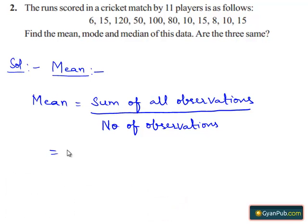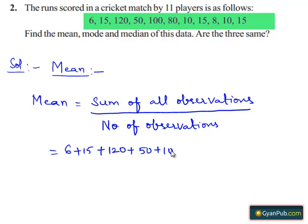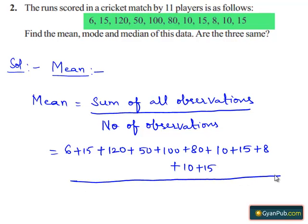Which is equal to 6 plus 15 plus 120 plus 50 plus 100 plus 80 plus 10 plus 15 plus 8 plus 10 plus 15, and the number of observations are 11.